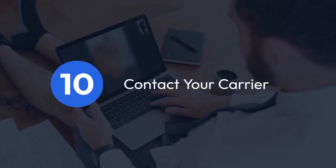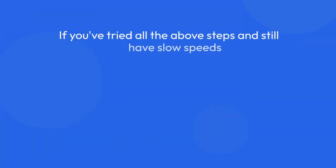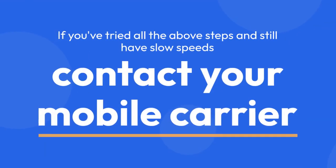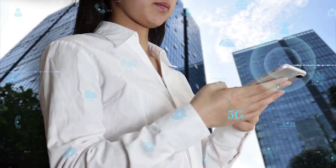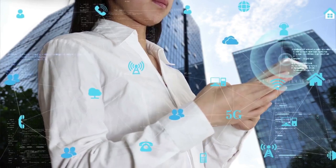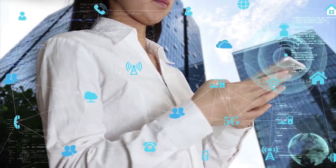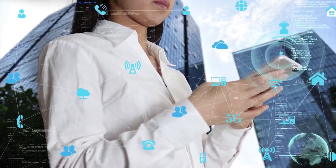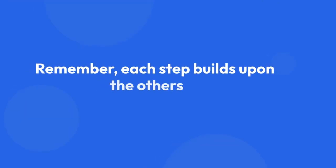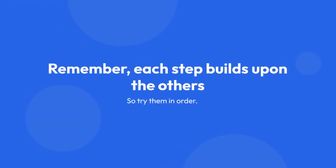10. Contact your carrier. If you've tried all the above steps and still have slow speeds, contact your mobile carrier. There might be issues with your data plan or network infrastructure that they can help resolve. Remember, each step builds upon the others, so try them in order.